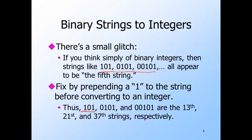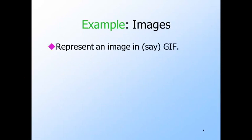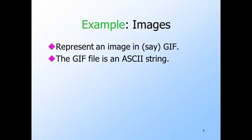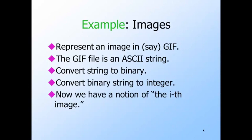For example, if we're given the string 101, put a one in front of it and treat 1101 as a binary integer — you get 13. If you put a one in front of 0101, that integer is 21, and so on. For a wilder example, consider images as a data type. There are many representations of images — let's talk about GIF. A GIF file is an ASCII string, so convert ASCII to binary, and then the binary string to an integer in the way we just discussed. And bingo, you have a notion of the i-th image.